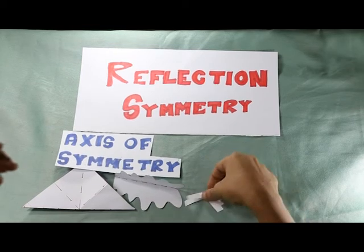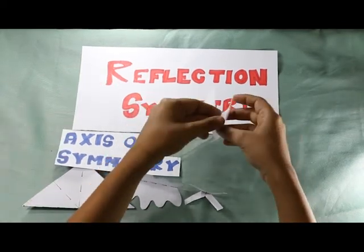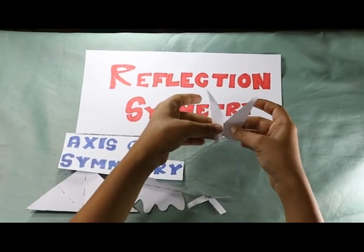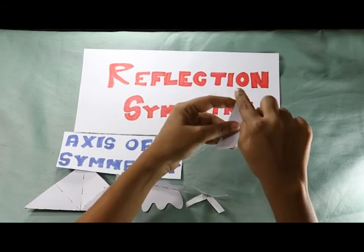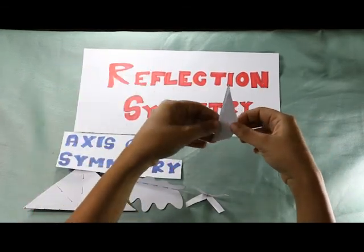Let's start with the fourth shape. When we fold the figure along the vertical dotted line, the two sides do not overlap. This means that the figure does not show reflection symmetry.